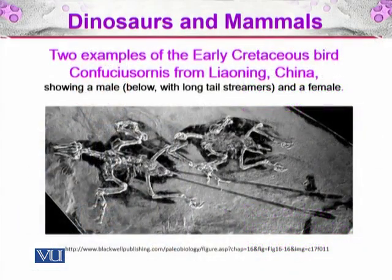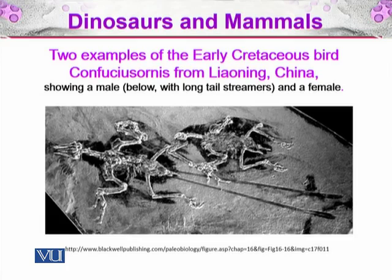Here you can see two examples of an early Cretaceous bird — Confuciusornis from Liaoning, China. It shows a male below with long tail streamers and a female above on the right side in the picture.